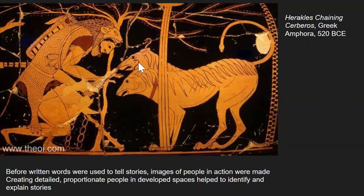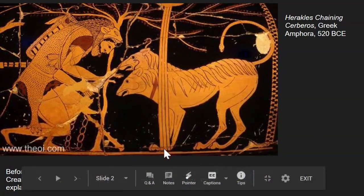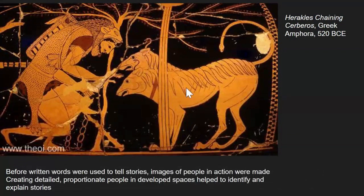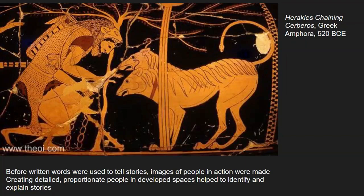We can also tell that Cerberus is behind the pillar because the pillar is overlapping or covering up part of Cerberus. That is one of four techniques that we will use to create a sense of space, which we need for our foreground, middle ground, and background. So over two thousand years ago, people were telling stories and illustrating stories, but they hadn't started to write them yet.